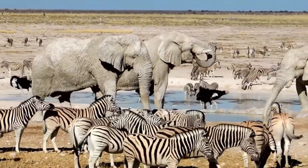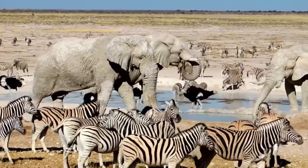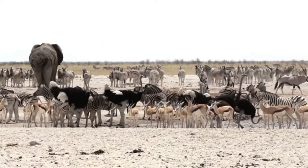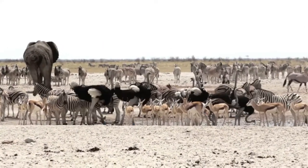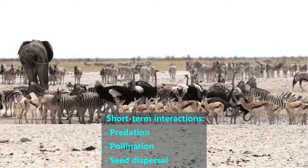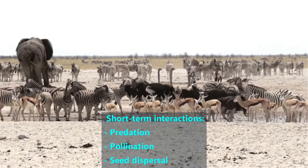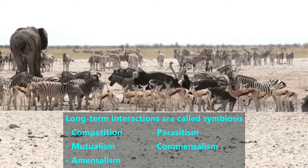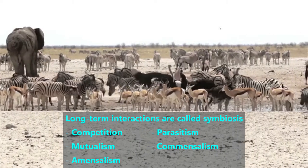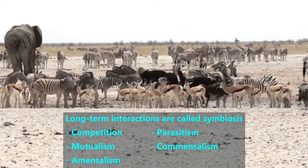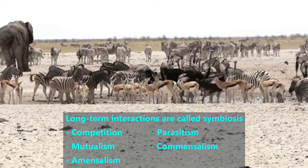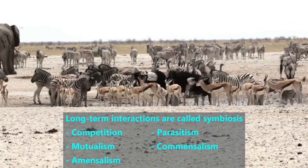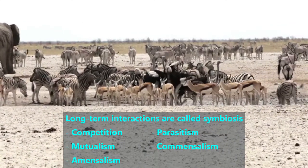An interaction describes how two organisms affect each other. We group these based on the length of the interaction. Short-term interactions include predation, pollination, and seed dispersal. Long-term interactions are also called symbiosis and include competition, parasitism, mutualism, commensalism, and amensalism.